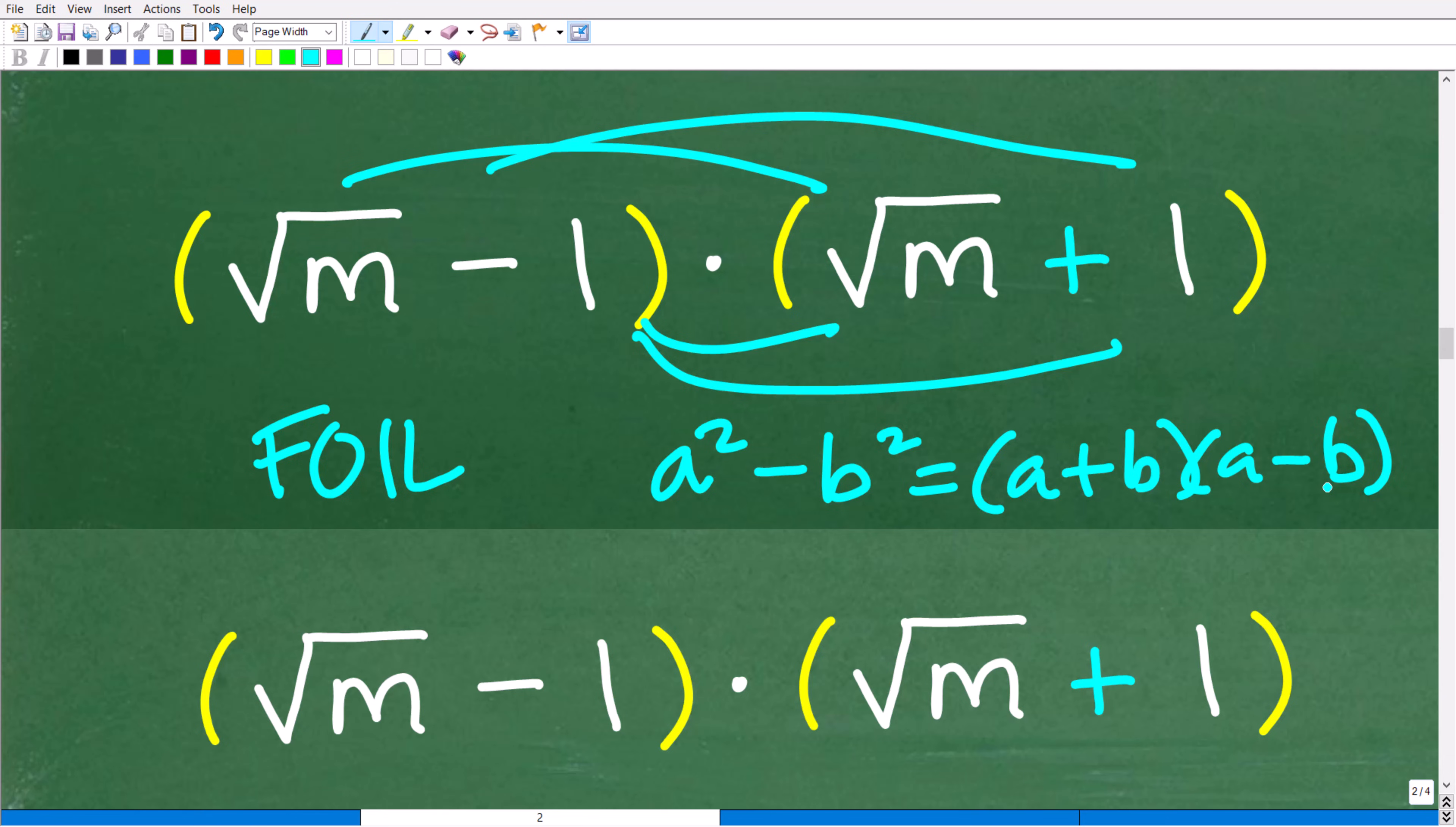But the bottom line is you need to know how to multiply binomials. These are called binomials in algebra because we have two things here. This right here by itself would be a monomial, but two terms put together, surrounded by parentheses, is called a binomial. So you've got to be able to find the product of two binomials.